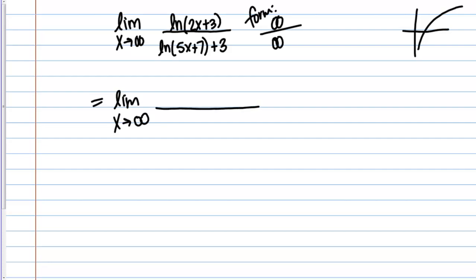If we take the derivative of the natural log of 2x plus 3, it's going to be 1 over 2x plus 3, but then we have to multiply by the derivative of the inside. It's going to be 2 over 2x plus 3.